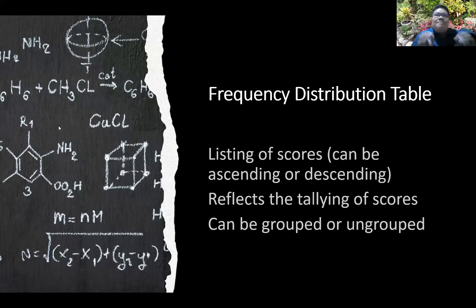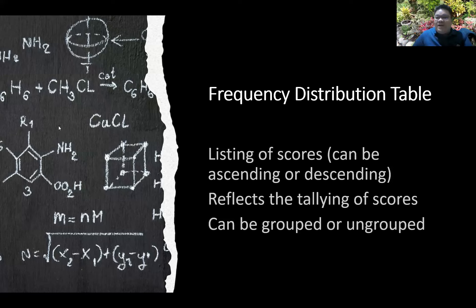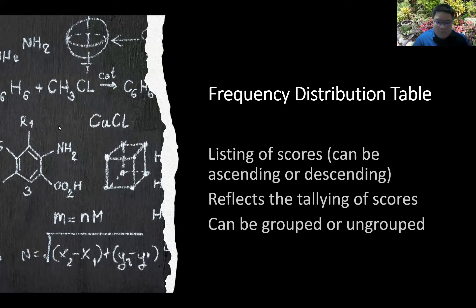The frequency distribution table — perhaps the easiest way to describe it is to call it a tally. Your frequency distribution table is the tally of your scores. It is the listing of scores, ascending or descending, that reflects the tallying of scores, wherein the data can be grouped or ungrouped.